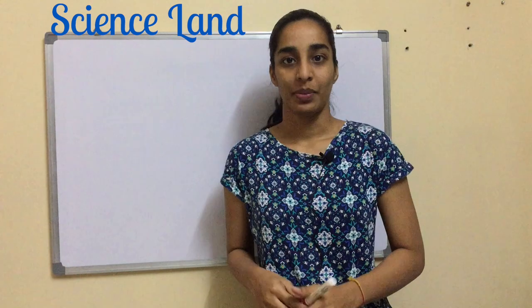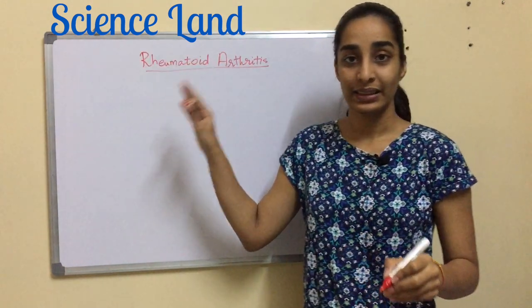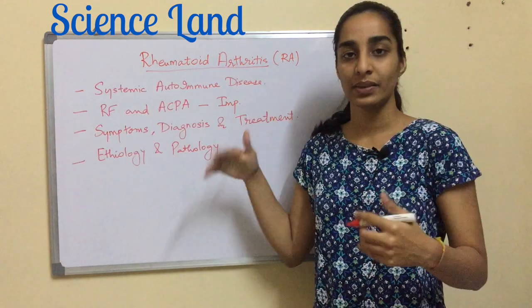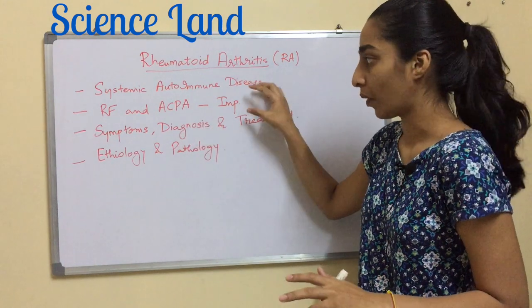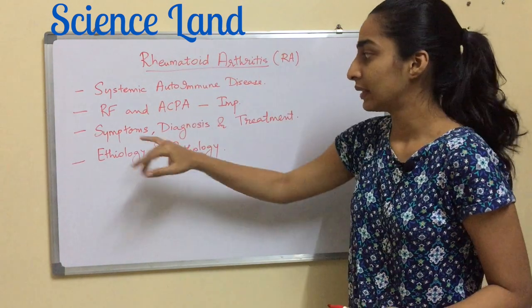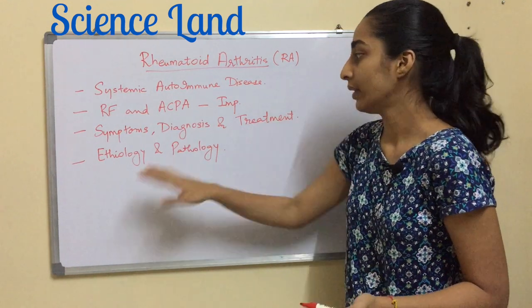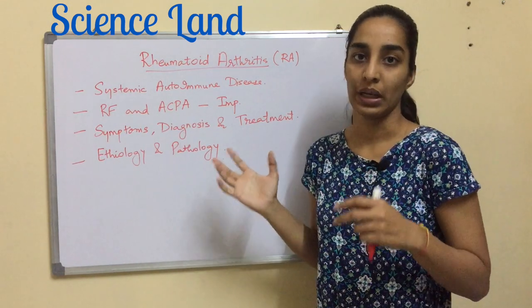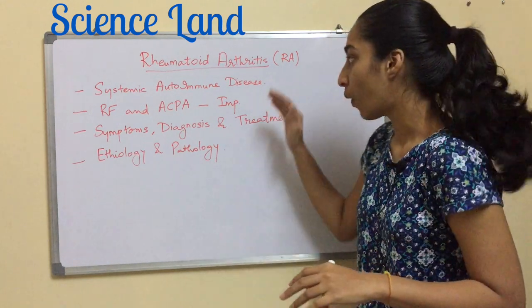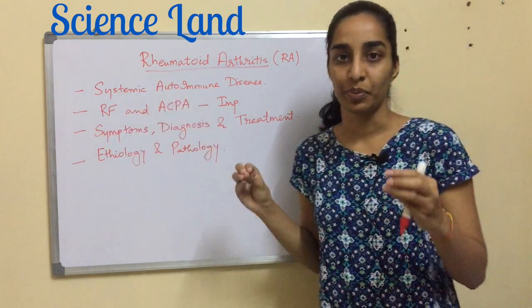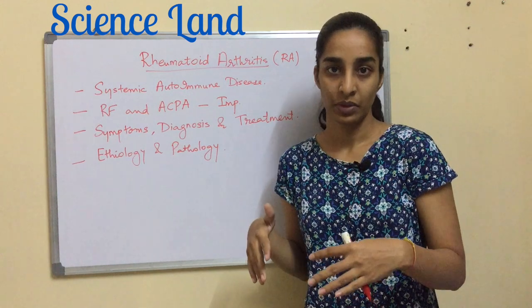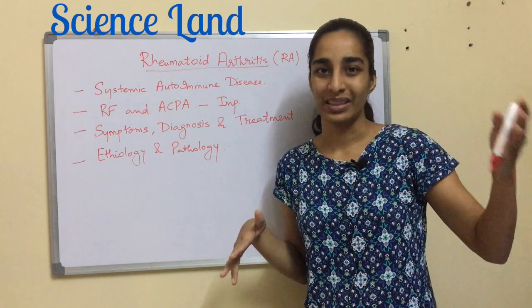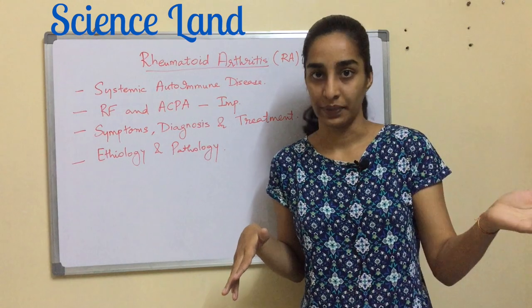Hello friends, welcome to Science Land. Today I'm going to talk about rheumatoid arthritis, also known as RA. In this video we are going to talk about RF and ACPA, which are important when it comes to rheumatoid arthritis — its symptoms, diagnosis, treatments, etiology, and pathology, wherein the immune system comes into the picture. To give a brief overview, RA is a systemic autoimmune disease, unlike organ-specific autoimmune diseases mentioned in earlier videos.